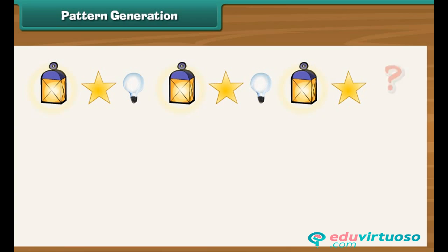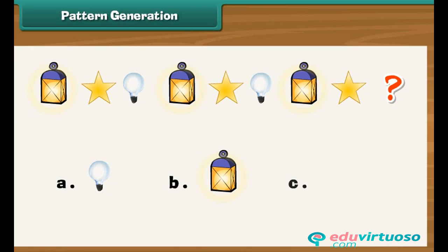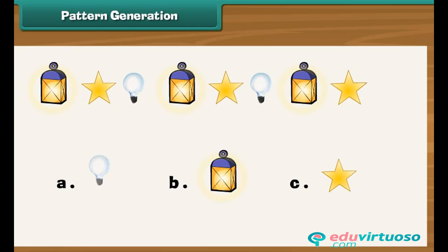Look at the given pattern. Guess the next picture required to complete the pattern. There are three objects in the pattern and they appear in a particular sequence: first the lantern, then the star, and then the bulb. The given pattern ends with a star, so the next object must be the bulb. So A is the correct option.